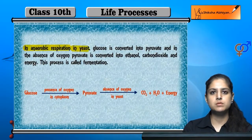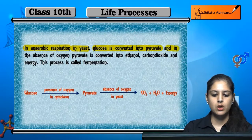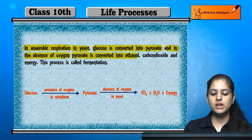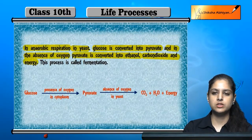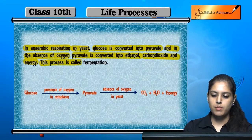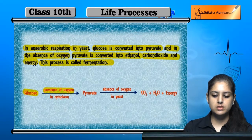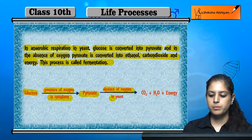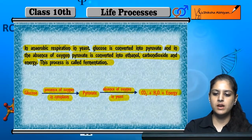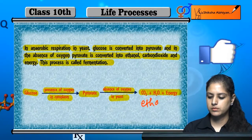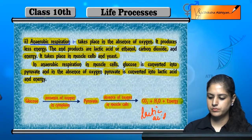In anaerobic respiration in yeast, glucose is converted into pyruvate in the cytoplasm. In the absence of oxygen, pyruvate is converted into ethanol, lactic acid, carbon dioxide, and energy. This process in yeast is called fermentation.